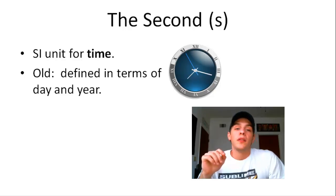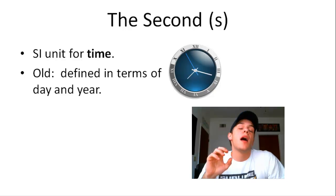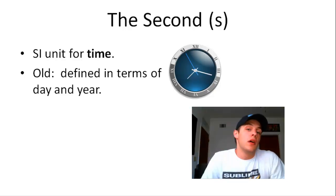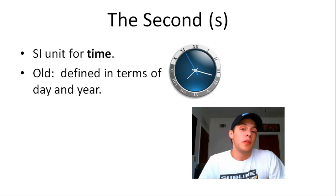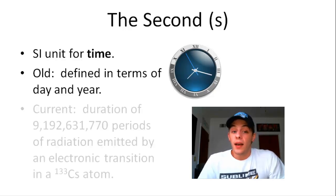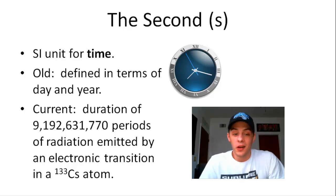Same thing with the year. The world does not take the exact same amount of time to revolve around the sun every year. It's roughly 365 days, but there's a little bit left over. It's not exactly that much. So the current and more precise definition of the second is the duration of, here we go,